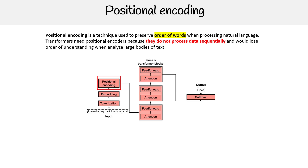The precursor to transformers is RNN — recurrent neural networks. They operated in sequential order, so they could retain the order of words. However, it made it hard to scale and to remember a large amount of words. So positional encoding is a way to fix that.